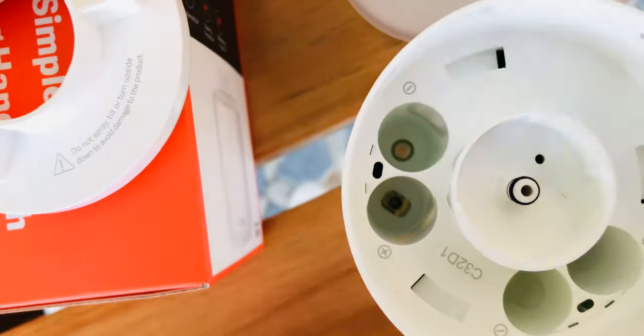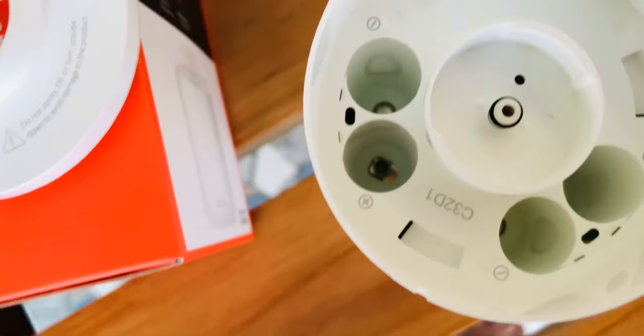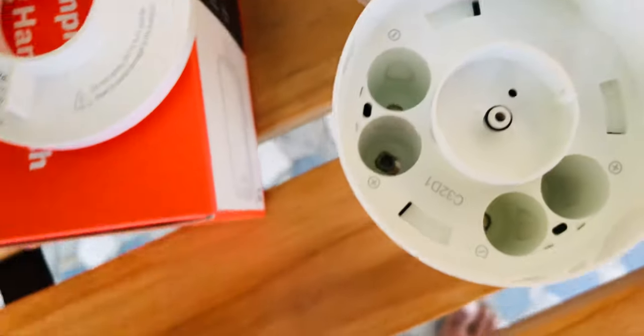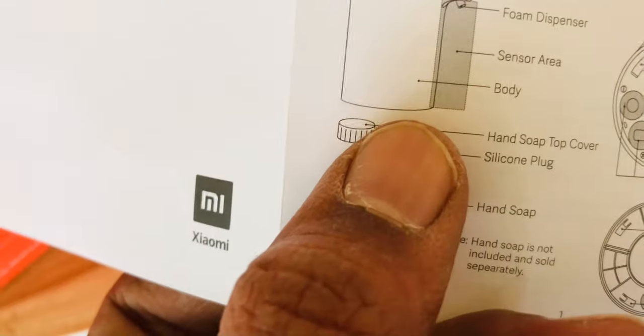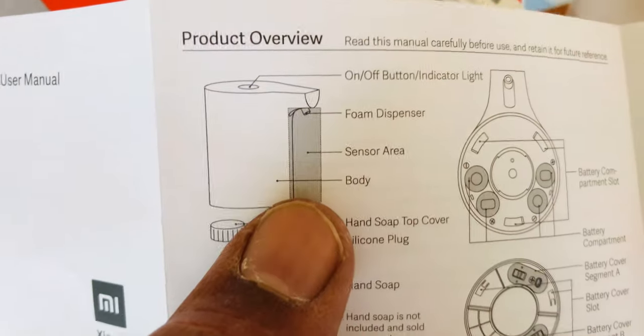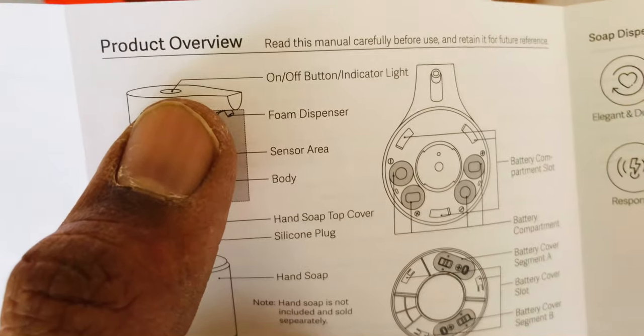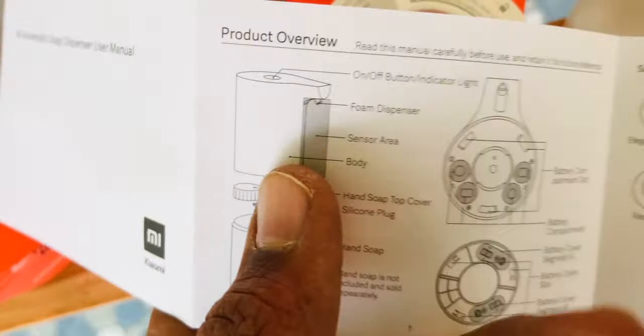We have to use four batteries in opposite directions. They've given plus and minus symbols to guide us. The user manual also explains the system. The sensor is in this gray color area. The on-off buttons are on top with the Mi logo.